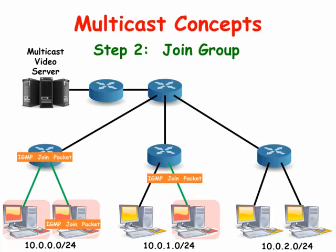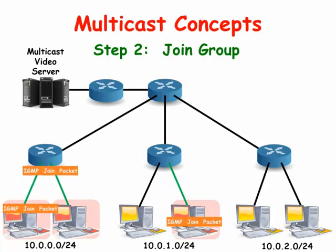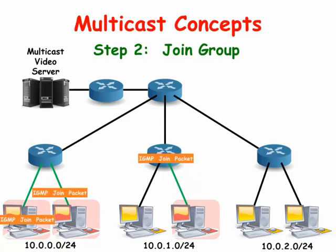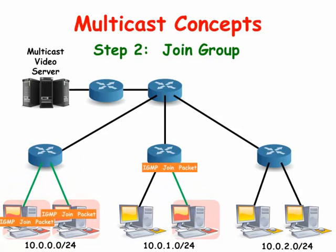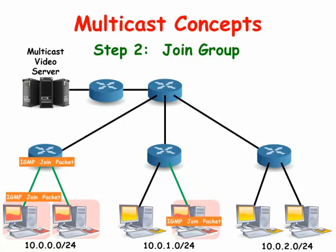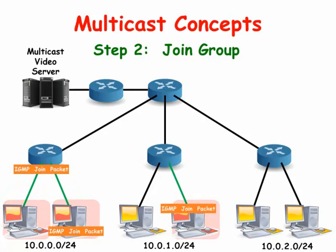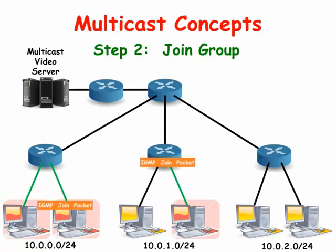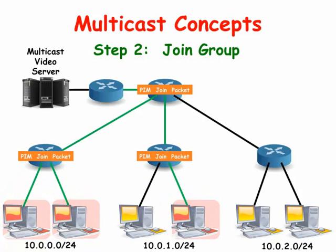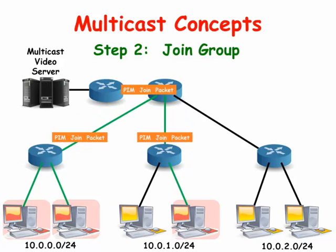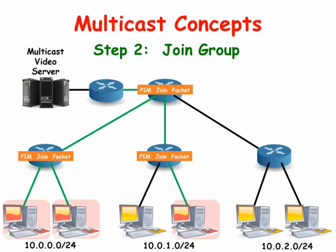Client computers can join the multicast group by sending an Internet Group Management Protocol join message to its directly connected router. Downstream routers would then connect to upstream routers using a PIM join message.